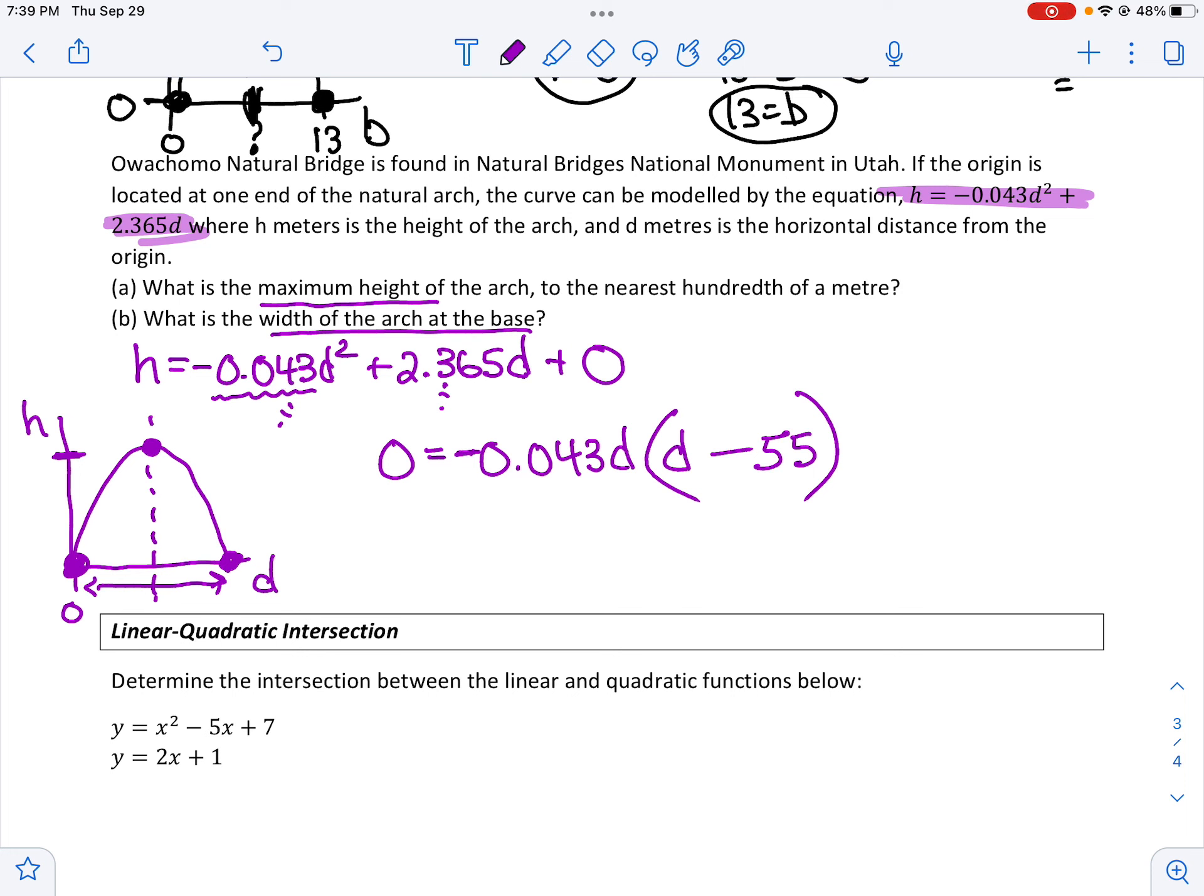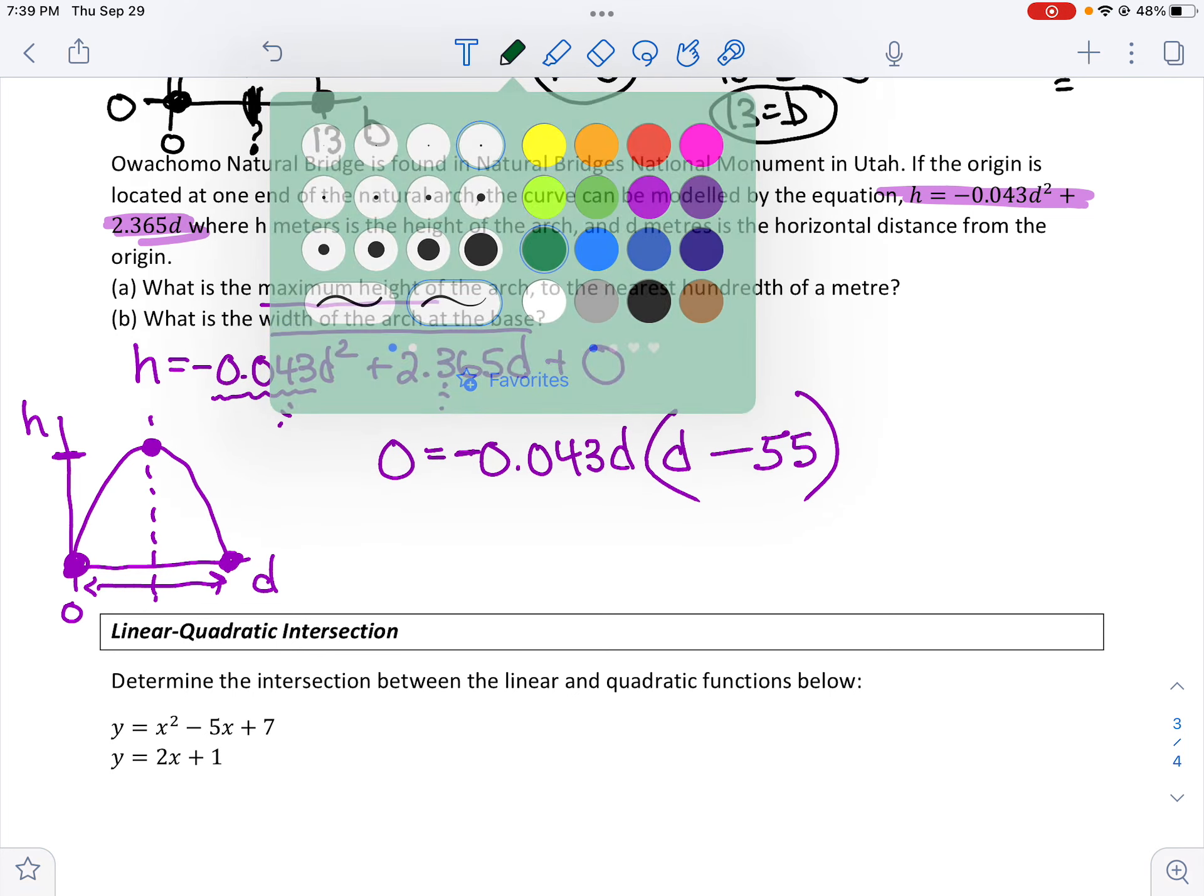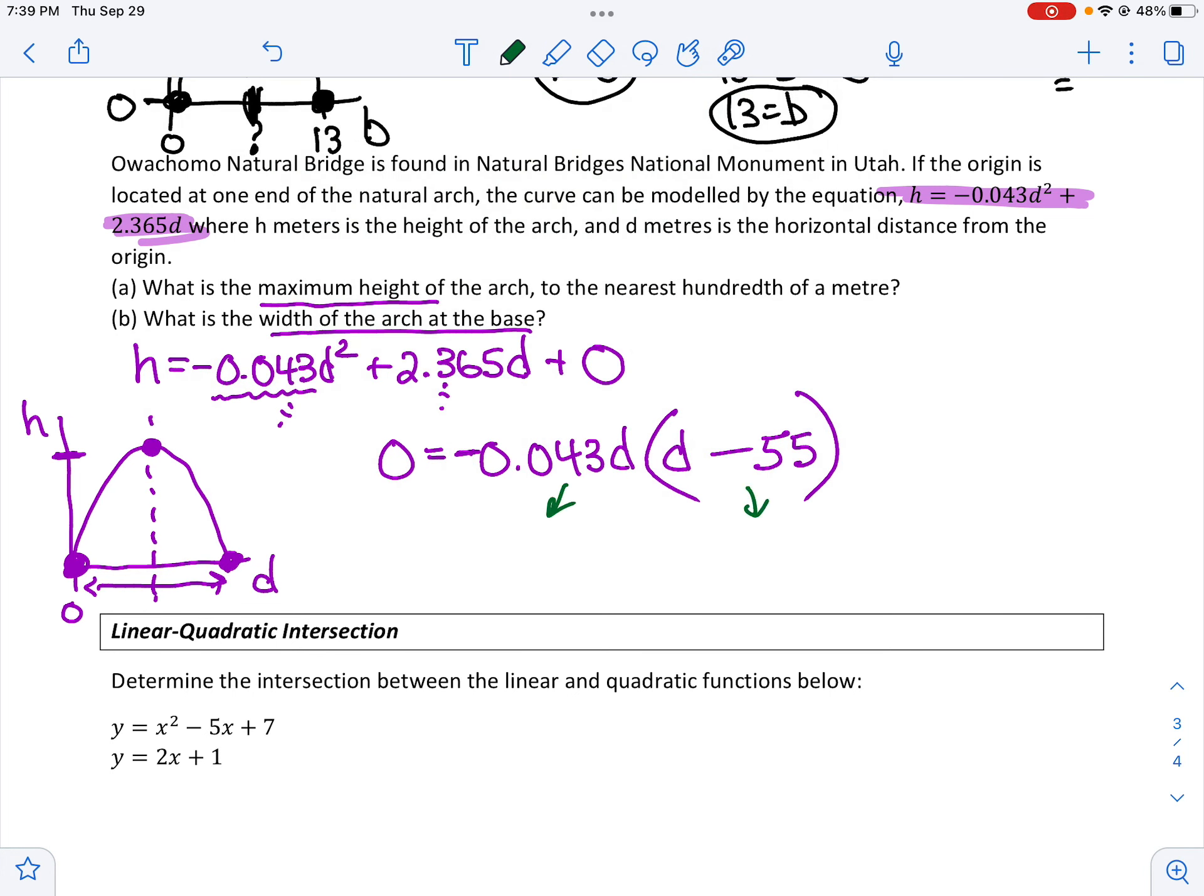So now to find the roots, I can set each of these equal to zero. So I know this one's just going to equal zero, right? Because if you had a negative 0.043 in front of it, I divide both sides by that. d is going to equal zero, which I already knew. It's right here. And then this one, d minus 55 equals zero. I know that d is going to equal 55. So right away, I've already answered b. The answer to b is going to be 55 meters. That's how wide the arch is.